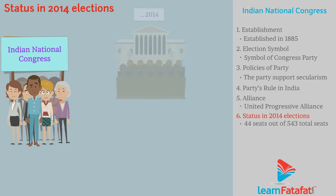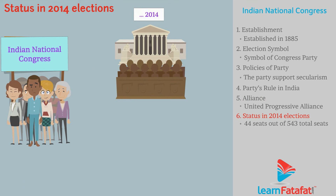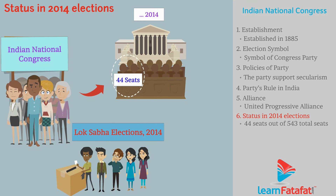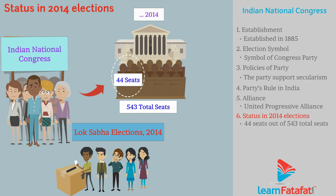In the 2014 Lok Sabha elections, this party was able to get only 44 seats out of 543 total seats, and thus this party acted as the opposition.